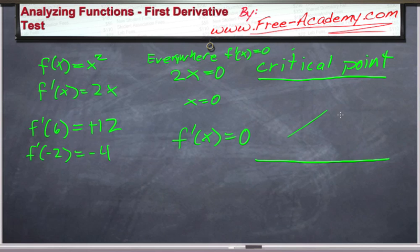Because if f prime of x was equal to 1, it would look like this, negative 1 would be like this. If the slope is 0, then it has to be a straight line. This only occurs where you have a minimum, where you have a maximum in the function. That's the only place where you can get a horizontal line.